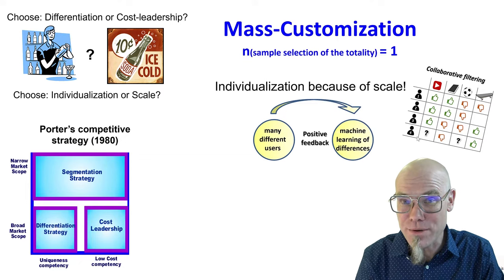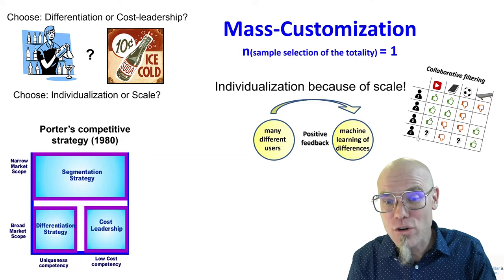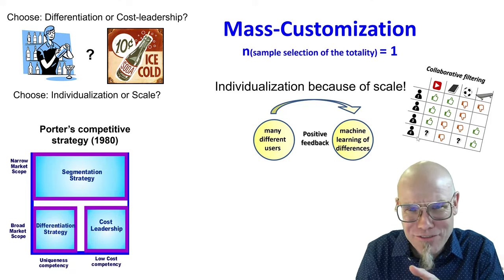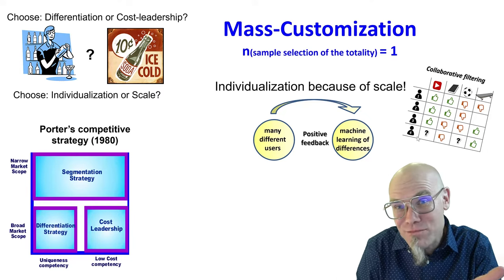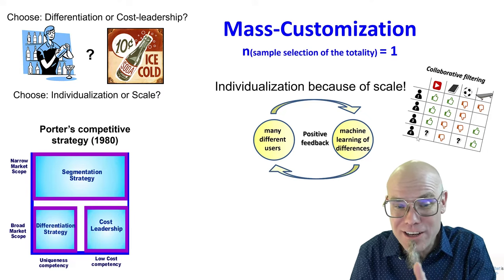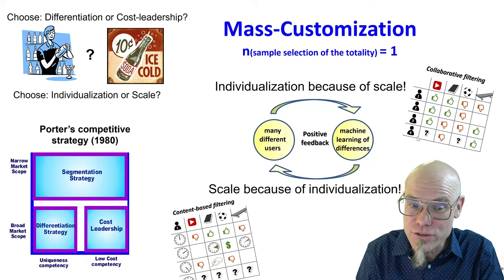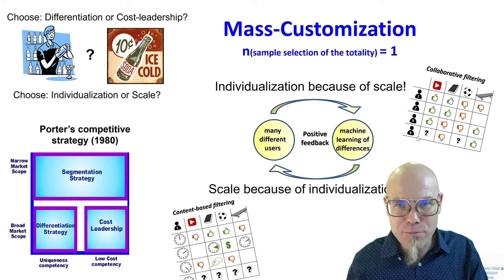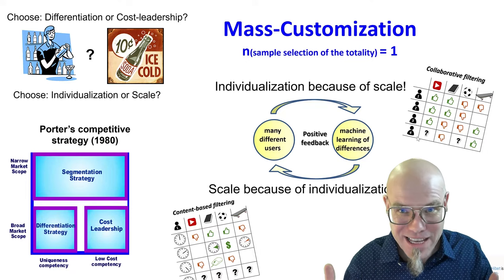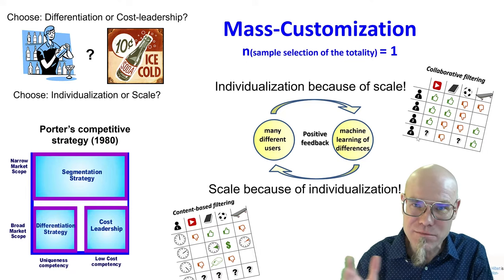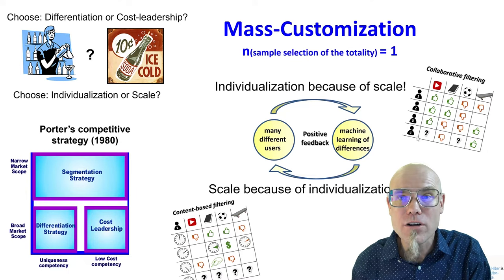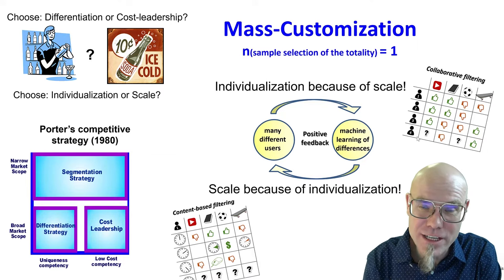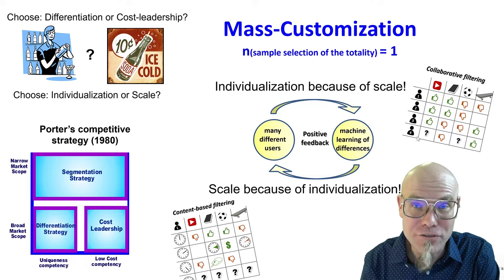That's individualization because of scale — mass customization. I don't have to be small and customized or big and plain vanilla; I can have both. That actually leads to a positive feedback loop: having many different users means I can do machine learning on many differences, find hidden patterns, cater to more different users. So I have scale because of individualization.